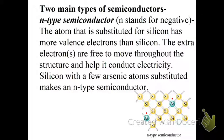There's two main types of semiconductor. The N stands for negative, and that means the atom substituted for silicon has more valence electrons than silicon, and the extra electrons are free to move throughout the structure to help it conduct electricity. Silicon with a few arsenic atoms makes an N-type conductor.